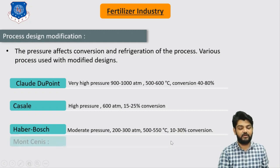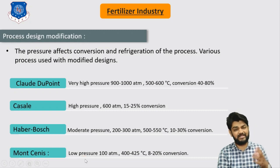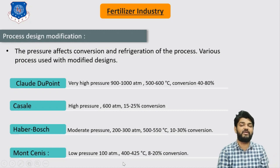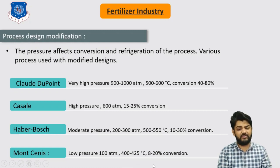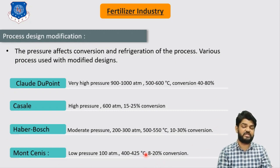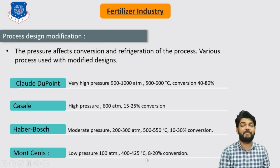The Montecatini process operates at low pressure of 100 atmospheres and temperature of 400 to 425°C, giving low conversion of 8 to 20%. These are the different process design modifications used for the manufacturing of ammonia.